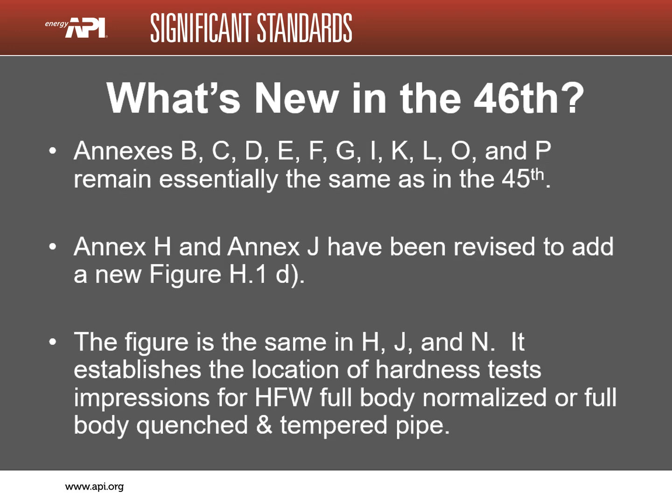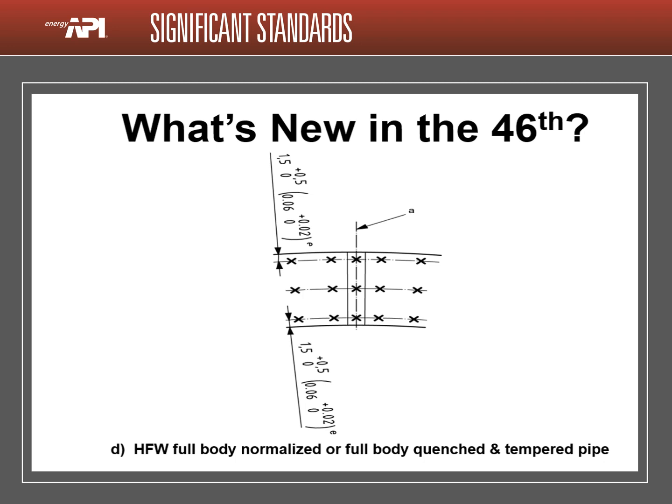Annexes B, C, D, E, F, G, I, K, L, O, and P are essentially unchanged. Annex H and Annex J have been revised to add new figure H1D and J1D respectively. The figure is the same in Annex H, J, and the new Annex N. It establishes the location for hardness test impressions for HFW full-body normalized or quenched and tempered pipe. This is the new figure that is found in Annexes H, J, and N.